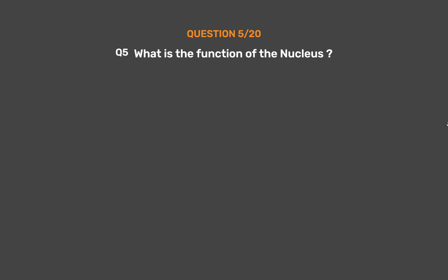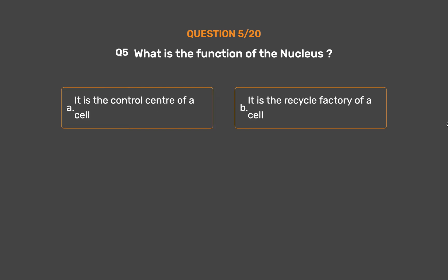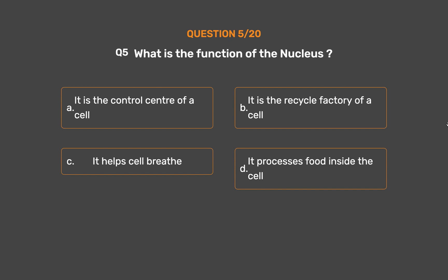Question number 5. What is the function of the nucleus? Option A: It is the control center of a cell. Option B: It is the recycle factory of a cell. Option C: It helps the cell breathe. Option D: It processes food inside the cell.